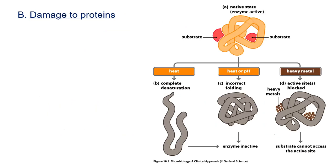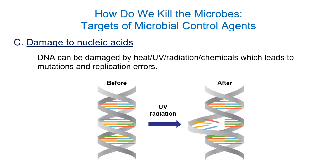We can also damage proteins. Proteins are a big part of biological functioning; many are enzymes. If you can denature — unfold — proteins, you can stop the organism from living, because the enzymes allow them to metabolize and do their functions. Heat is usually the method, sometimes pH, and a lot of chemicals will interact with proteins as well. The last method targets nucleic acids — radiation is really good for destroying nucleic acids.